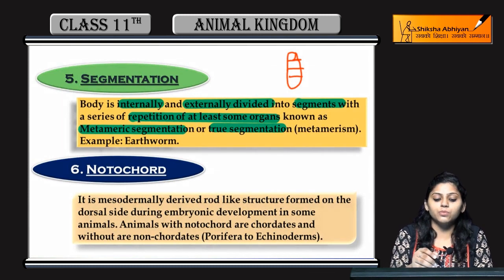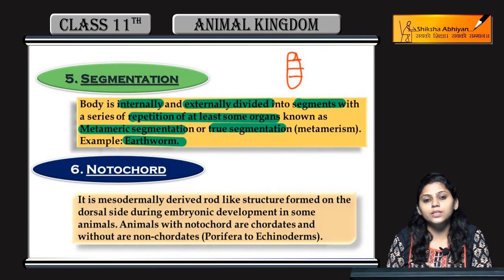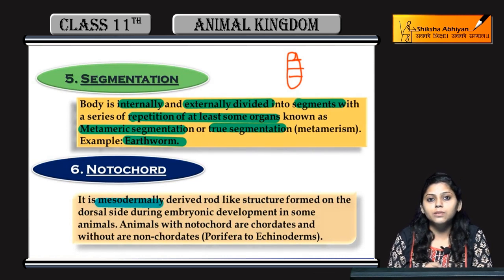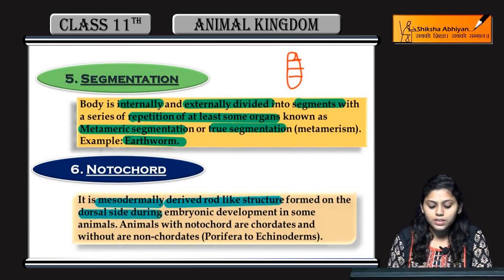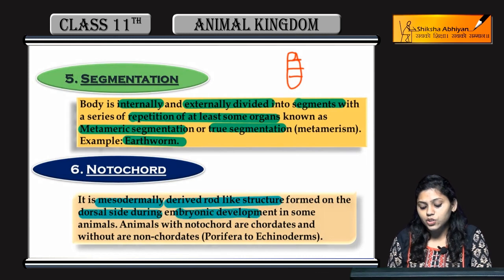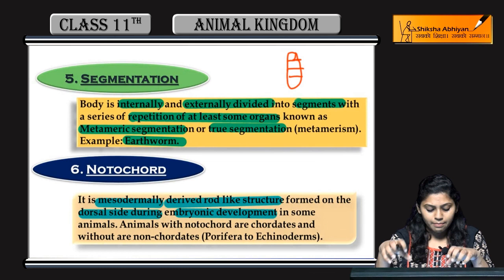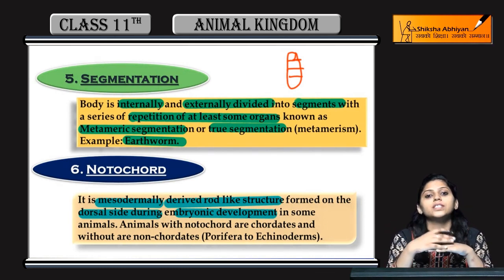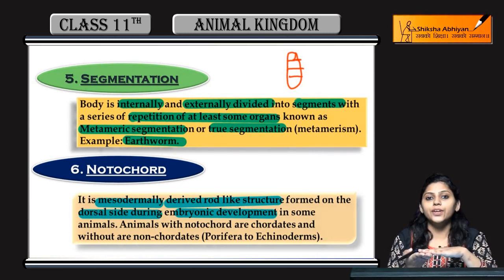True segmentation is seen in earthworms. Notochord, if present, is a mesodermal, mesoderm-derived, rod-like structure formed on the dorsal side during embryonic development. When embryonic development is occurring, the notochord forms on the dorsal side, derived from the mesoderm layer. If this is our hand, the upper side is the dorsal surface and the lower side is the ventral surface.